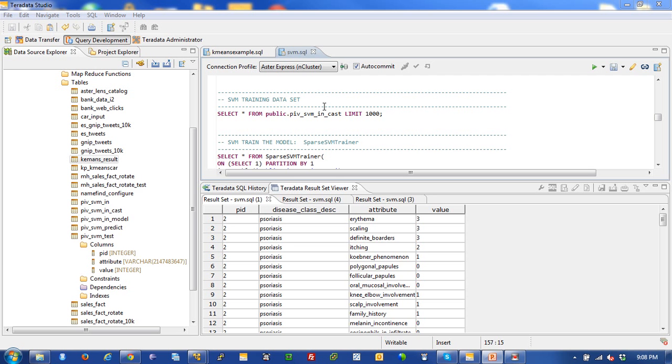So that's pretty much it for that. But just to show you that I actually did it. And I did this in Aster Express with a small data set, of course. And you could do this against a very large data set. Here's my training data set. So select star from PIV SVM in cast. And here's my data right here.